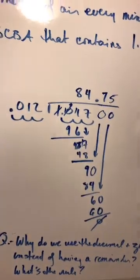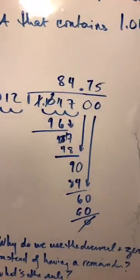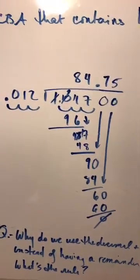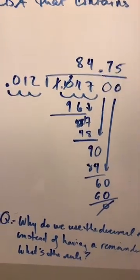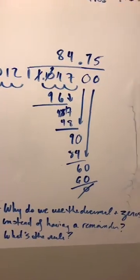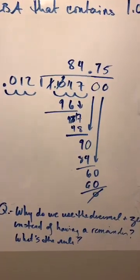Now Michelle understood that she had to move the decimals and she did the division just fine. If you have questions I did the division for you that way it's there. Her question was actually why do we use the decimal and zeros instead of having a remainder? What's the rule?